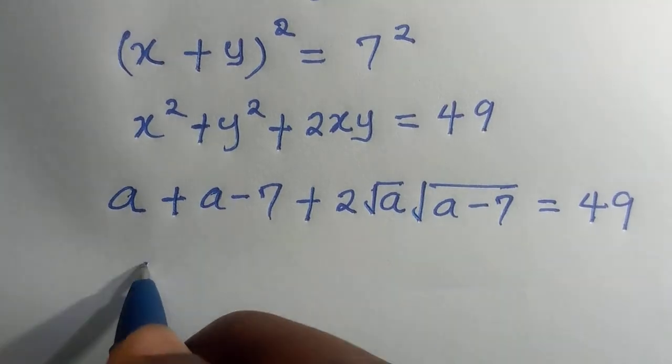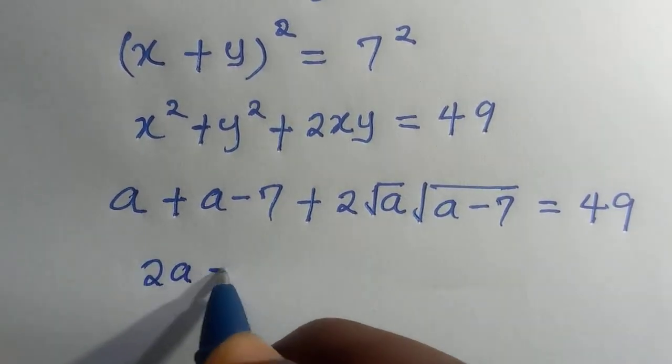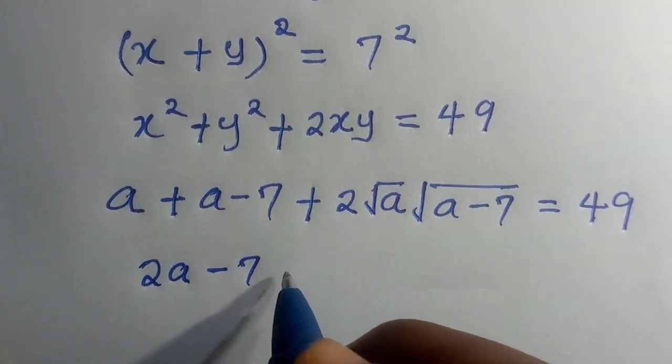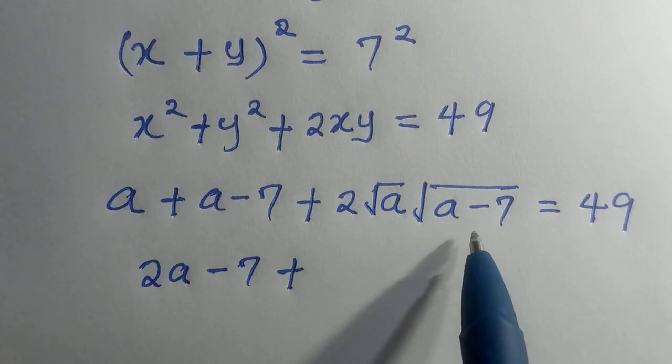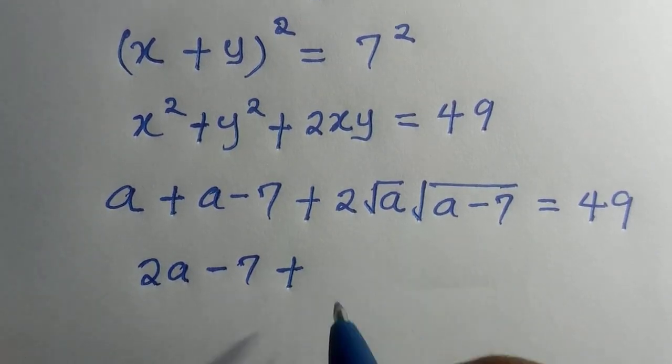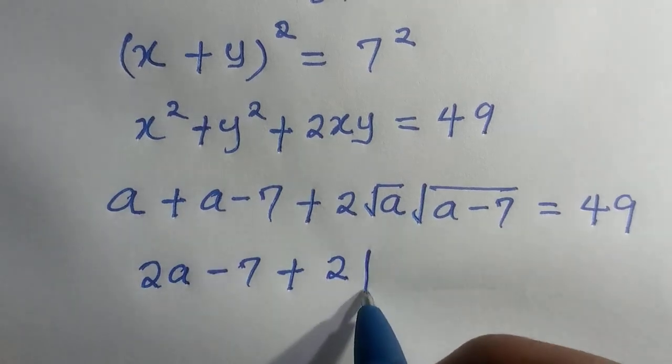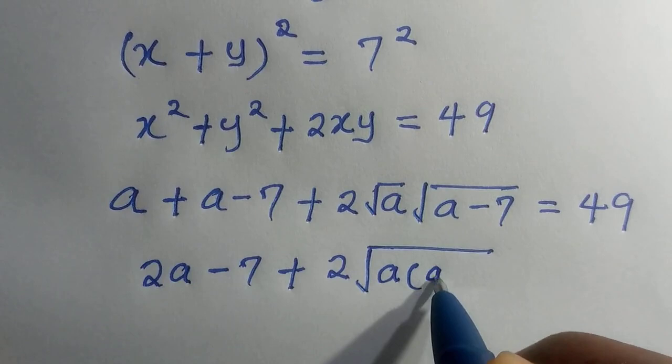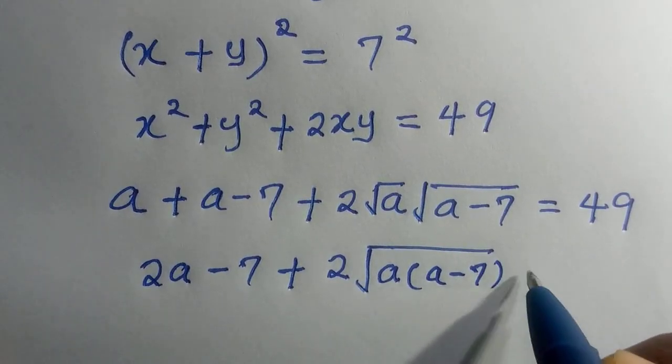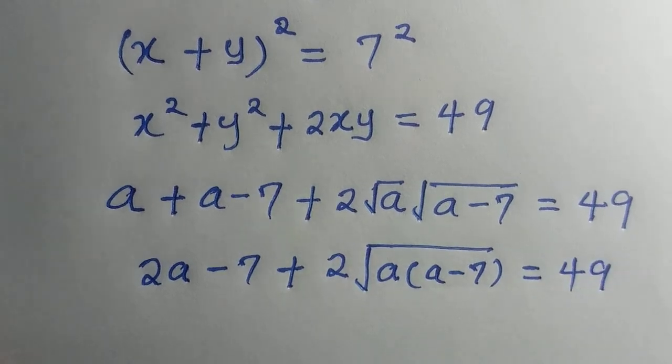a + a is 2a - 7 plus, so the two of these, √a and √(a-7), are having roots. We are going to have it as 2√a into the bracket of (a-7), everything equals 49.